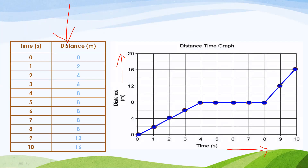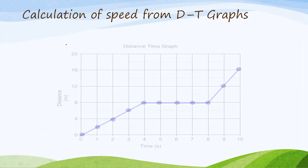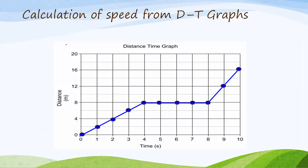From the distance time graph, it is easy to calculate the speed of an object. Speed is nothing but the slope of the distance time graph — slope means y divided by x. For any graph, slope means the value along the y-axis divided by the value along the x-axis. So from the distance time graph we can find out the speed of the object. Let's calculate speed at different intervals of time by splitting the graph into three different parts.